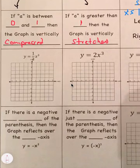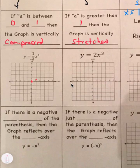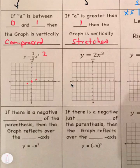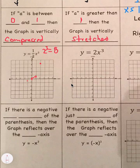Let's look at some examples. When graphing, plug in values for x to see where the function goes. Starting with x equals 0: one-half times 0 cubed is 0. When x is 1, 1 cubed is 1, times one-half gives one-half. When x is negative 1, negative 1 cubed is negative 1, times one-half gives negative one-half. When x is 2, 2 cubed is 8, and one-half of 8 is 4. When x is negative 2, the result is negative 4.